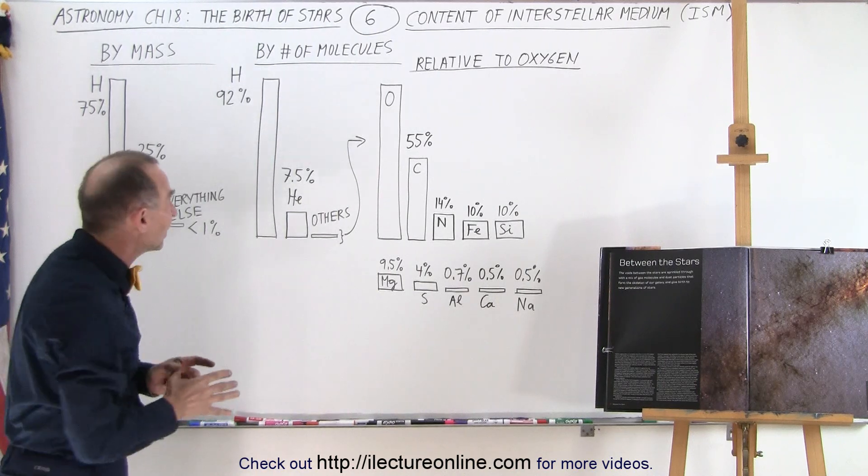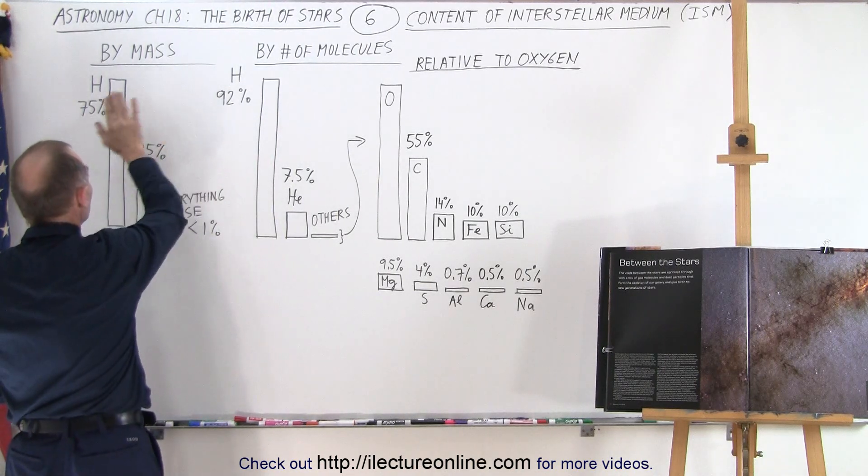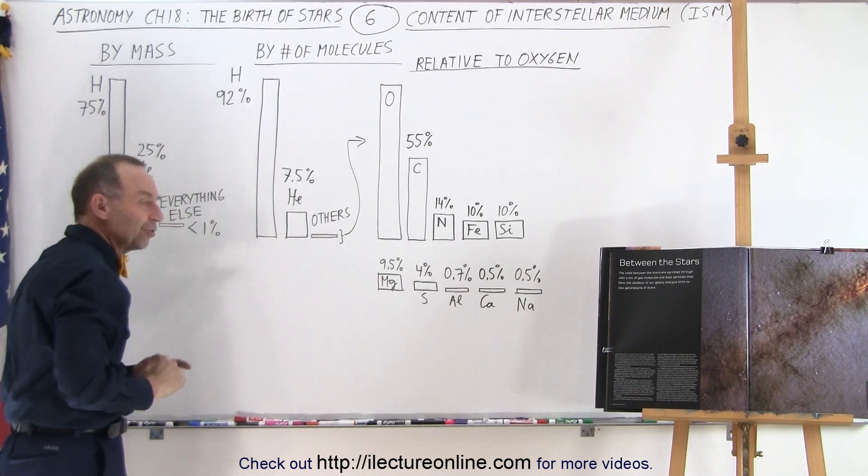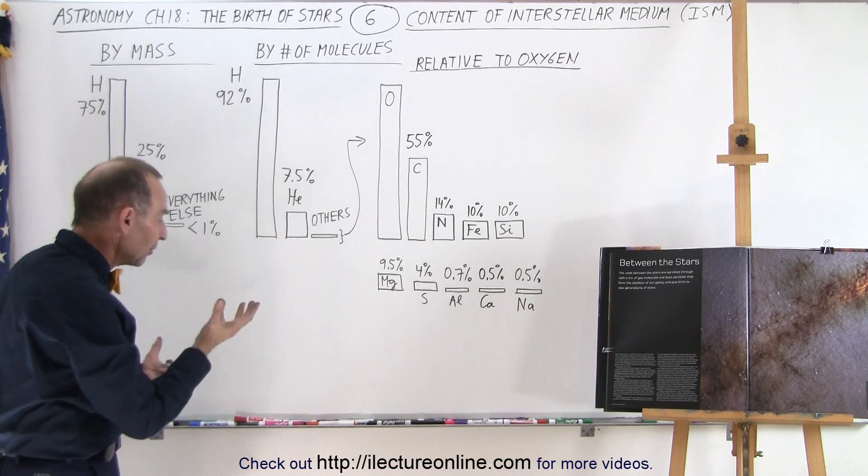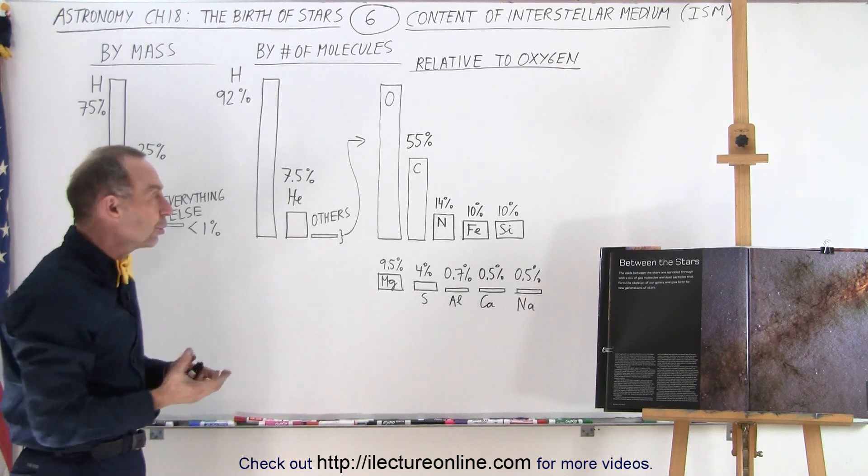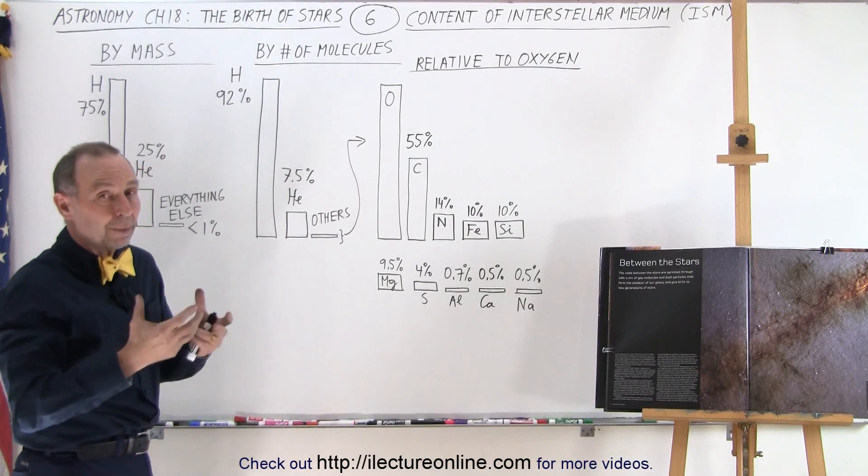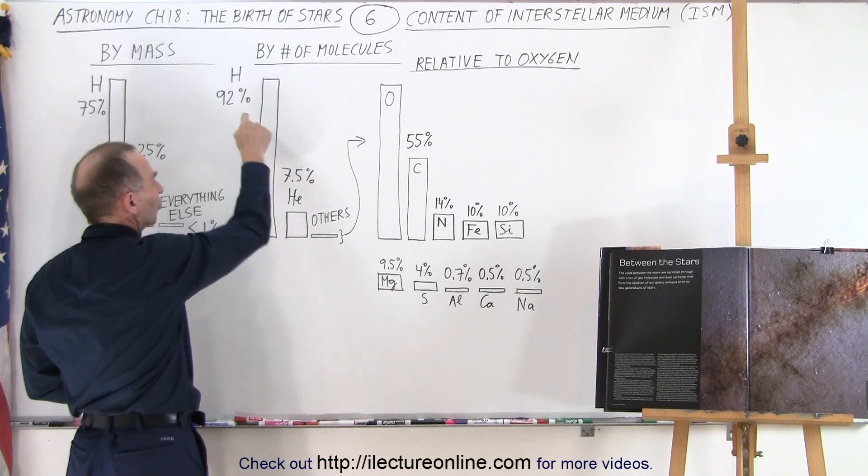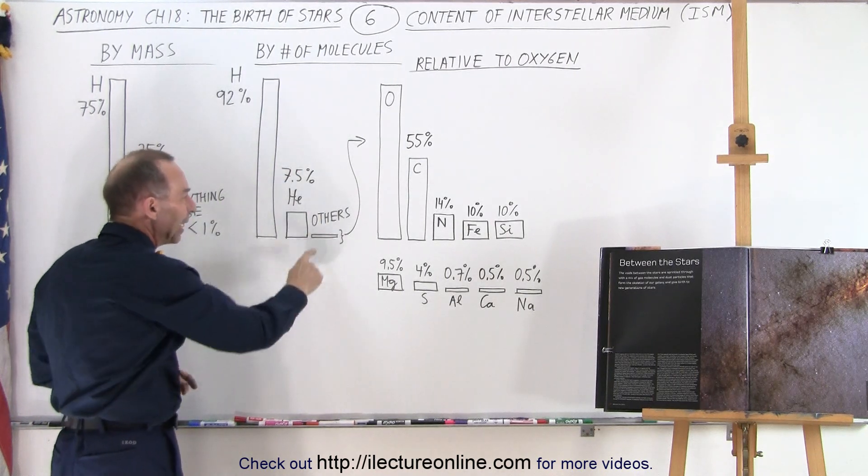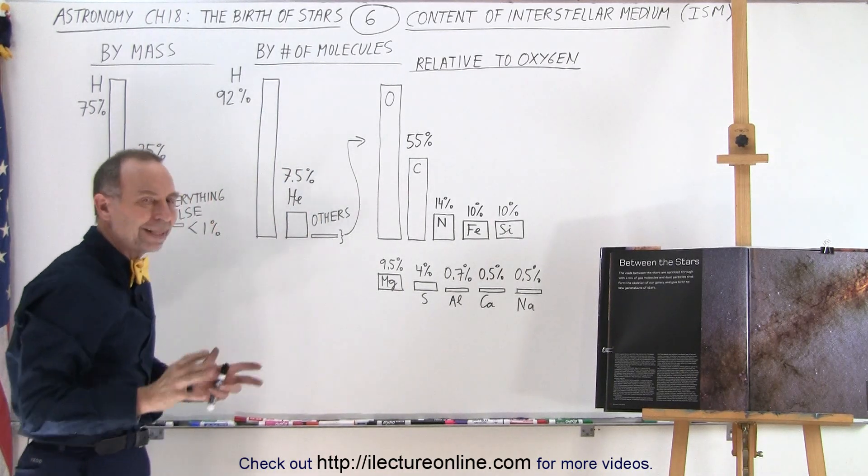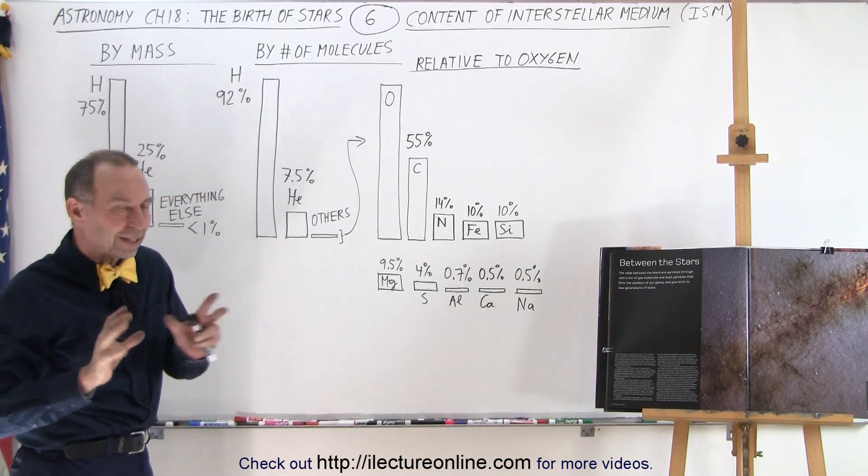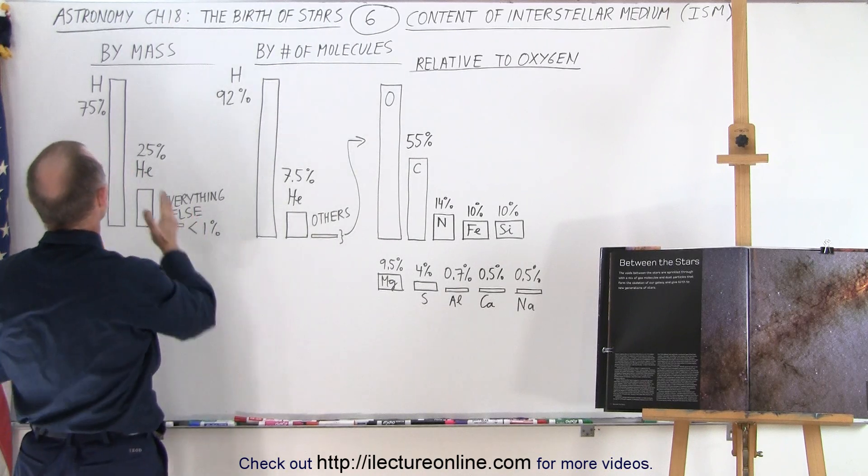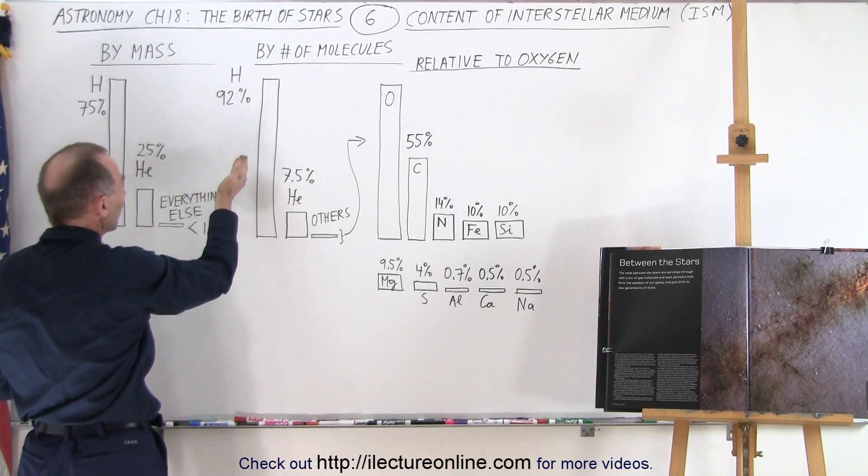Now it depends how we look at it. If we look at it by mass, it's about 75% hydrogen, 25% helium, and about less than 1% of everything else. But if we compare them molecule by molecule, since helium is a much bigger molecule with about four times the mass of hydrogen, you can say that there's about 92% hydrogen and about 7.5-8% helium, and then everything else makes up just a little bit less than 1%. So by mass, it's 75-25, by number of molecules, it's roughly 92 versus 8%.